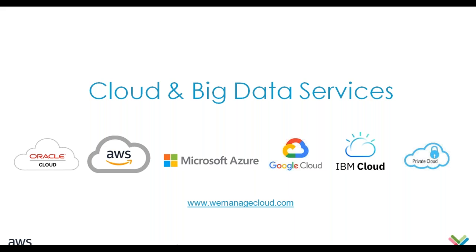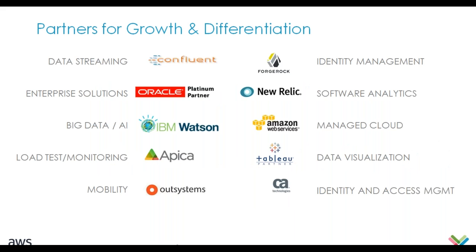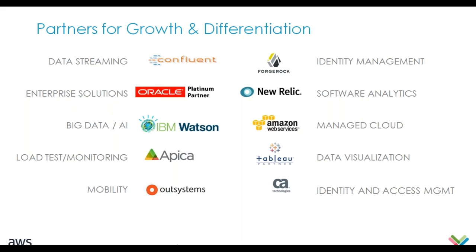We also have a DevOps practice for our customers. For cloud and big data, we're partners with all major clouds: Oracle, Amazon, Microsoft, Google, and IBM. We've been a Microsoft partner since 2009 when they started their partner program. Our technology partners include solutions for data streaming, Oracle big data, load code testing and monitoring with Apica, mobility, OutSystems low-code development, IAM with ForgeRock, NCA, Tableau, Amazon, New Relic, and others as they come along.